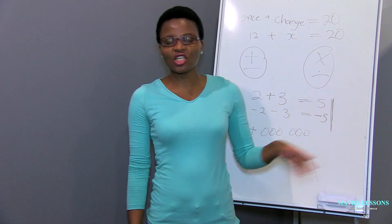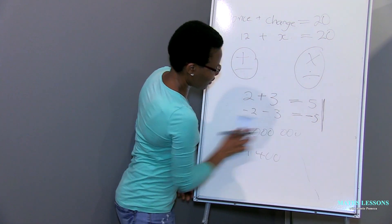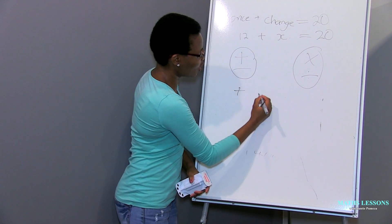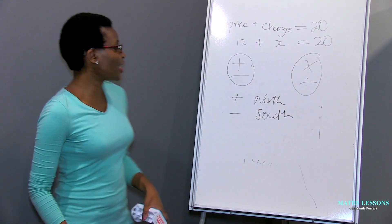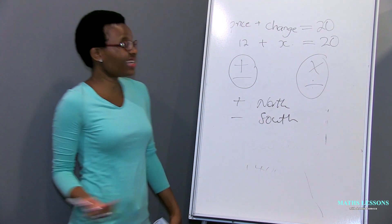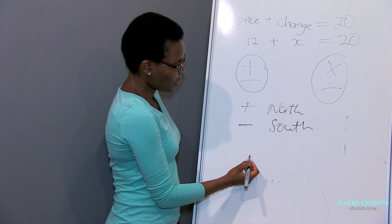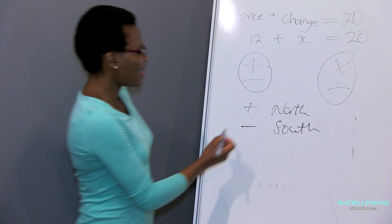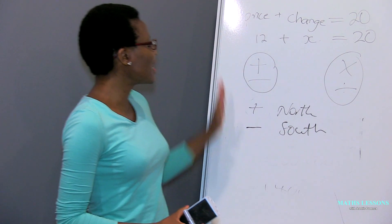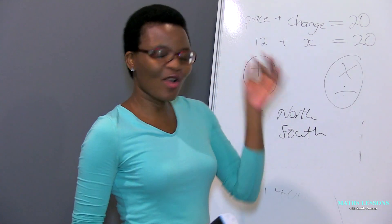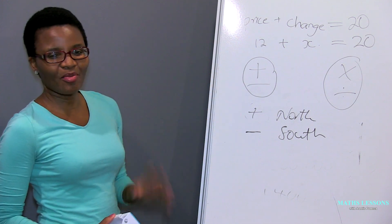Another example is your GPS. The people who designed your GPS used signs — let's say positive means north and negative means south. If someone designing the GPS forgot to put a negative, and you were meant to go south of Johannesburg, the GPS would land you in Pretoria. Just imagine how upset you'd be. So it's important to treat signs carefully because you are going to apply them in real life, and there could be dire consequences.